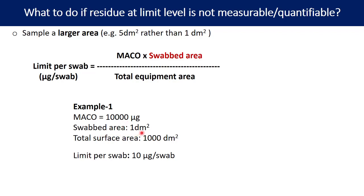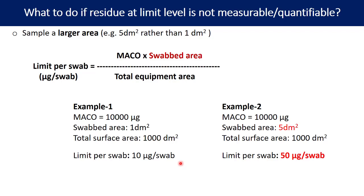In the first example, the swab area is 1 decimeter square (10×10 cm), and the total surface area is 1000 decimeter square, giving a limit of 10 micrograms per swab. In the second example, the swab area is increased to 5 decimeter square, which increases the limit to 50 micrograms per swab. You may get a good response at 50 micrograms analyte concentration, making this an effective way to increase analyte concentration by increasing the swabbing surface area.